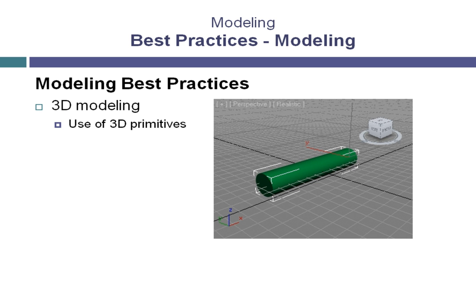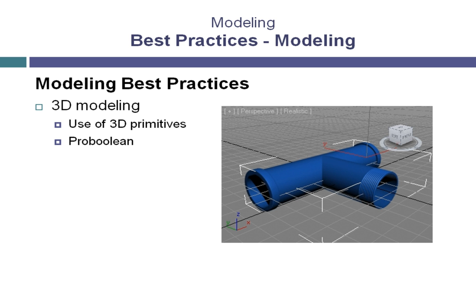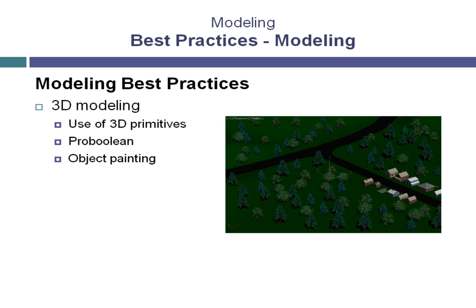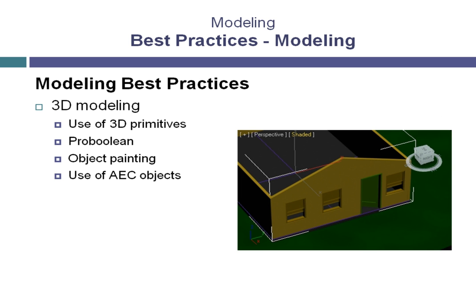When talking about using 3D primitives and best practices for building complex models, we can look at compound objects like ProBoolean. The ProBoolean compound object is a very capable Boolean operator that allows you to combine three-dimensional objects using options like Union, Subtraction, and Intersection in order to build visually complex 3D objects. The ability to paint different objects into your scene can save a tremendous amount of time compared to other methods. If you are building architectural designs, the use of the AEC objects can be a tremendous time-saver — objects like doors and windows work directly with the wall objects, eliminating time-consuming editing tasks.